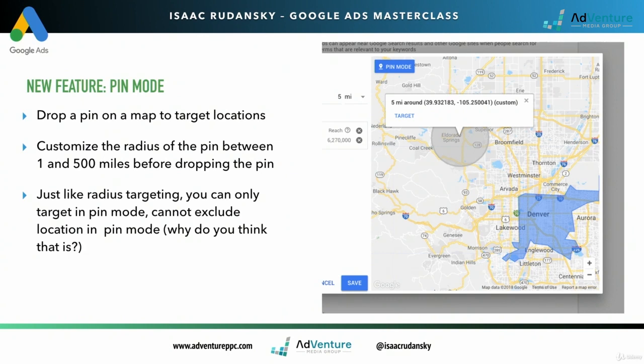Just like the other types of radius targeting, you can only target locations in pin mode. You can't exclude locations in pin mode. If you want to specifically exclude a location, you have to have the address or you type in a city, state, postal code, etc.